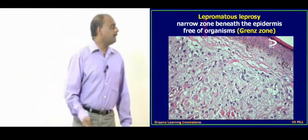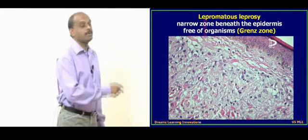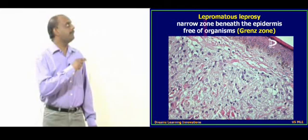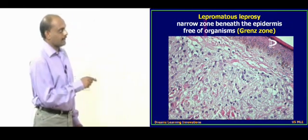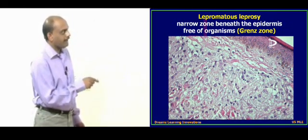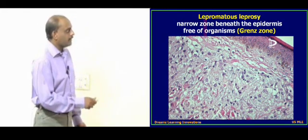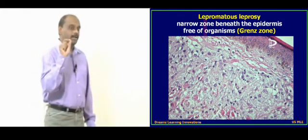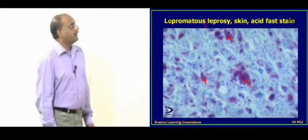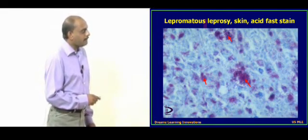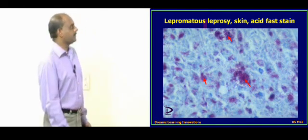Underlying the grenz zone, there will be an area where macrophages teeming with organisms are found. This is the typical skin biopsy in lepromatous leprosy. Neural involvement is a late feature in lepromatous leprosy. You can see the narrow grenz zone not affected by macrophage infiltration, and below it the mycobacteria being taken up by macrophages — the leprosy cells — showing acid-fast stain positivity.